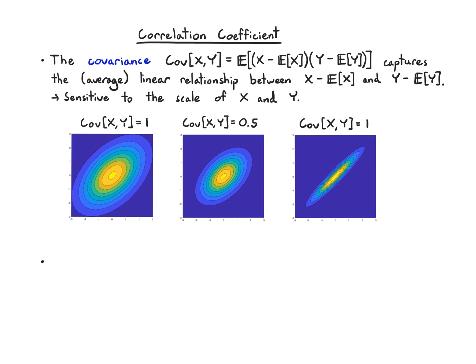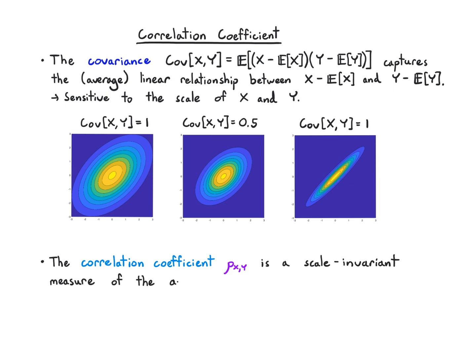Between the left and the middle, I've scaled down x and y, and that affected the covariance, whereas the distribution on the right is both scaled and stretched to get the same covariance as the left. To get around this, we introduce the correlation coefficient, which we write as rho_xy — a scale-invariant measure of the average linear relationship between x and y.